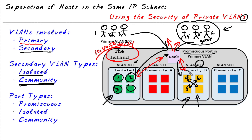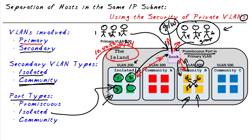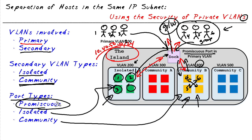The exception to the rule is a special port called the promiscuous port in the primary VLAN that all devices can connect to. They need to communicate with that port because that's very likely where the default gateway is going to be for that subnet. In summary: an isolated port is part of an isolated secondary VLAN; a community port is associated with a community secondary VLAN; and a promiscuous port — always in the primary VLAN — will talk to any port inside the private VLAN configuration. The purpose is to restrict which ports in the same IP subnet can communicate with each other.